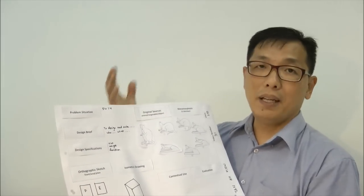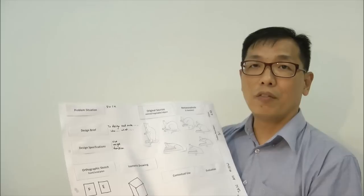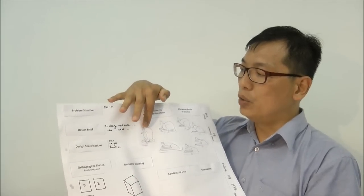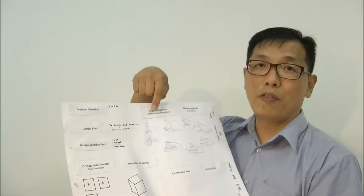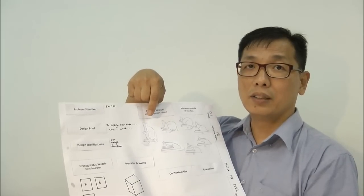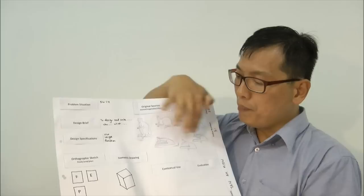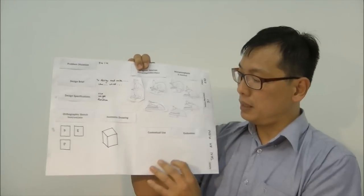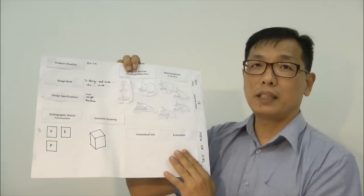Sources can be animal, plant, or vegetable, and then you morph. You can actually photocopy from your existing worksheet and then morph them. Contextual use will be placed here, and the evaluation. You have